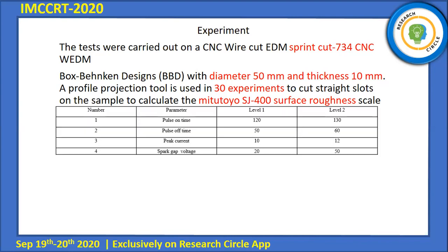You can see in this table the input parameters: pulse on time, pulse off time, and peak current at two levels. Level one (low level): pulse on time 10, pulse off time 15, peak current 10, spark gap voltage 40. Level two (high level): the higher values for these parameters, up to 20.